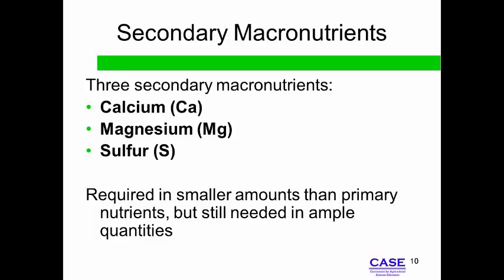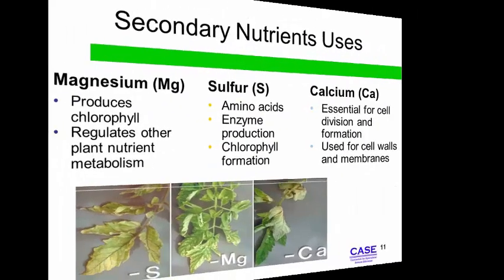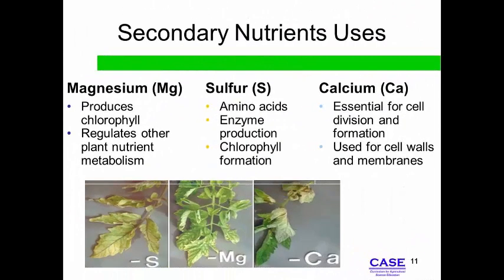Plants rely on sulfur to develop enzymes and vitamins within the plant. Plants that grow in an environment lacking one of the secondary nutrients, as shown here, are usually unthrifty or less productive.